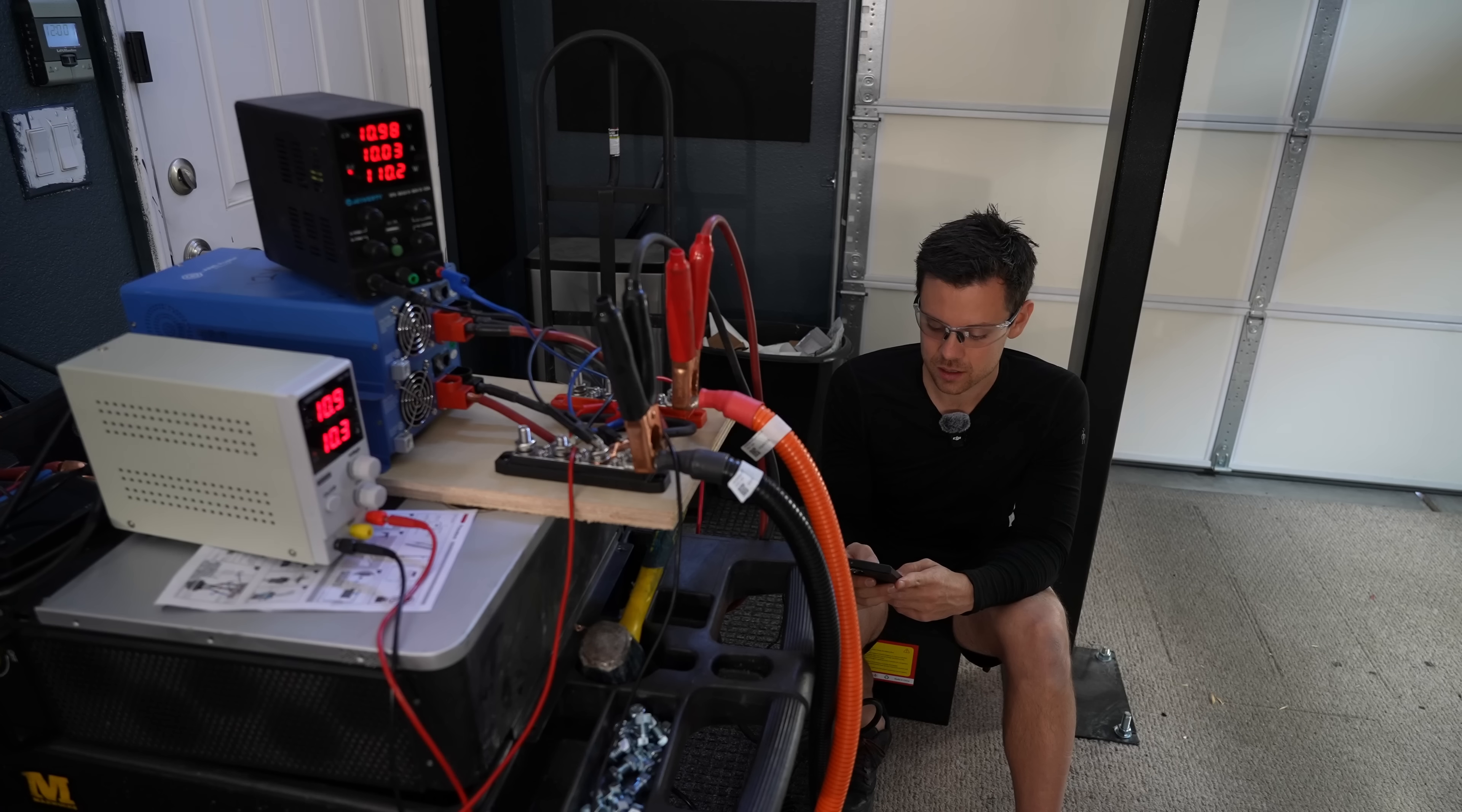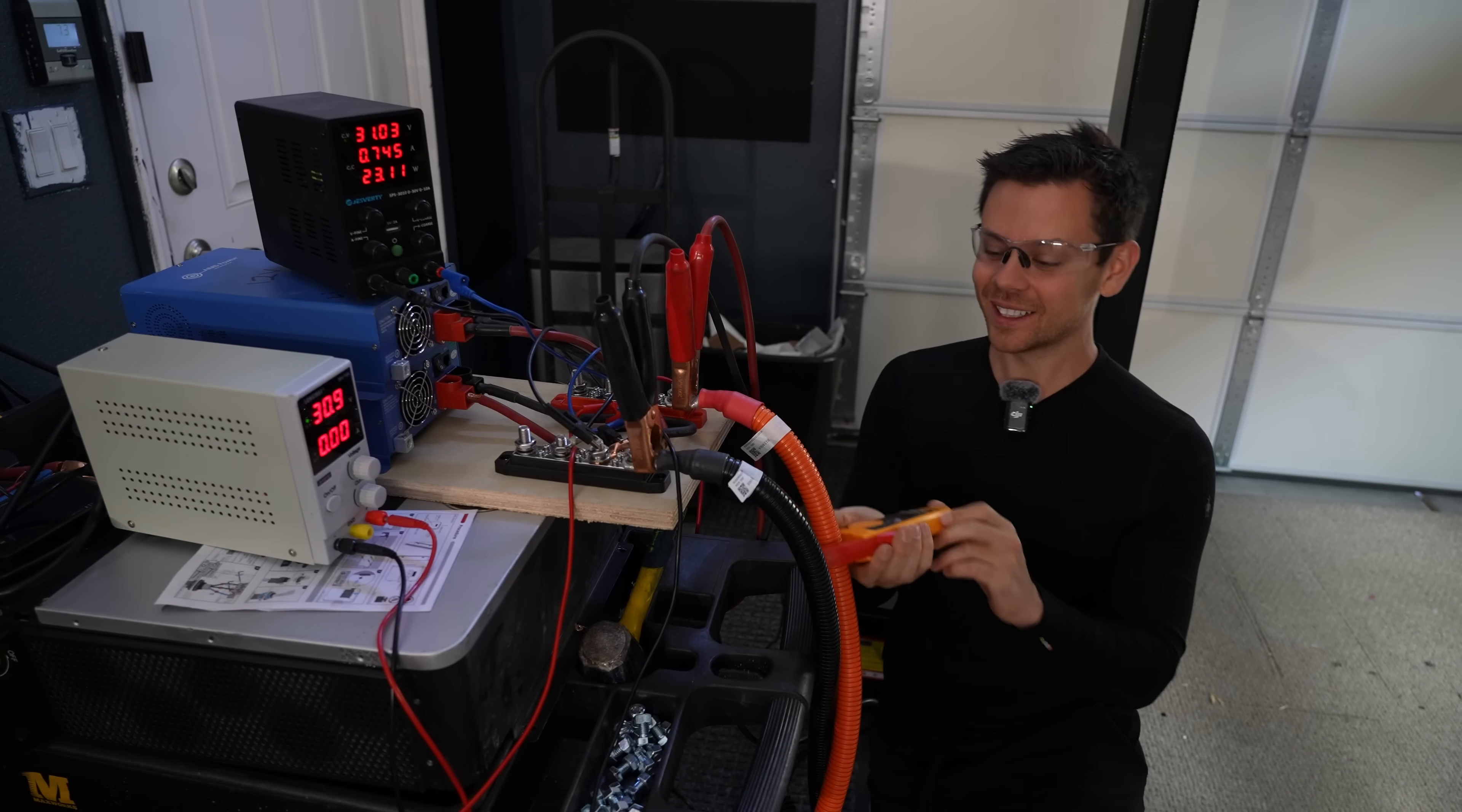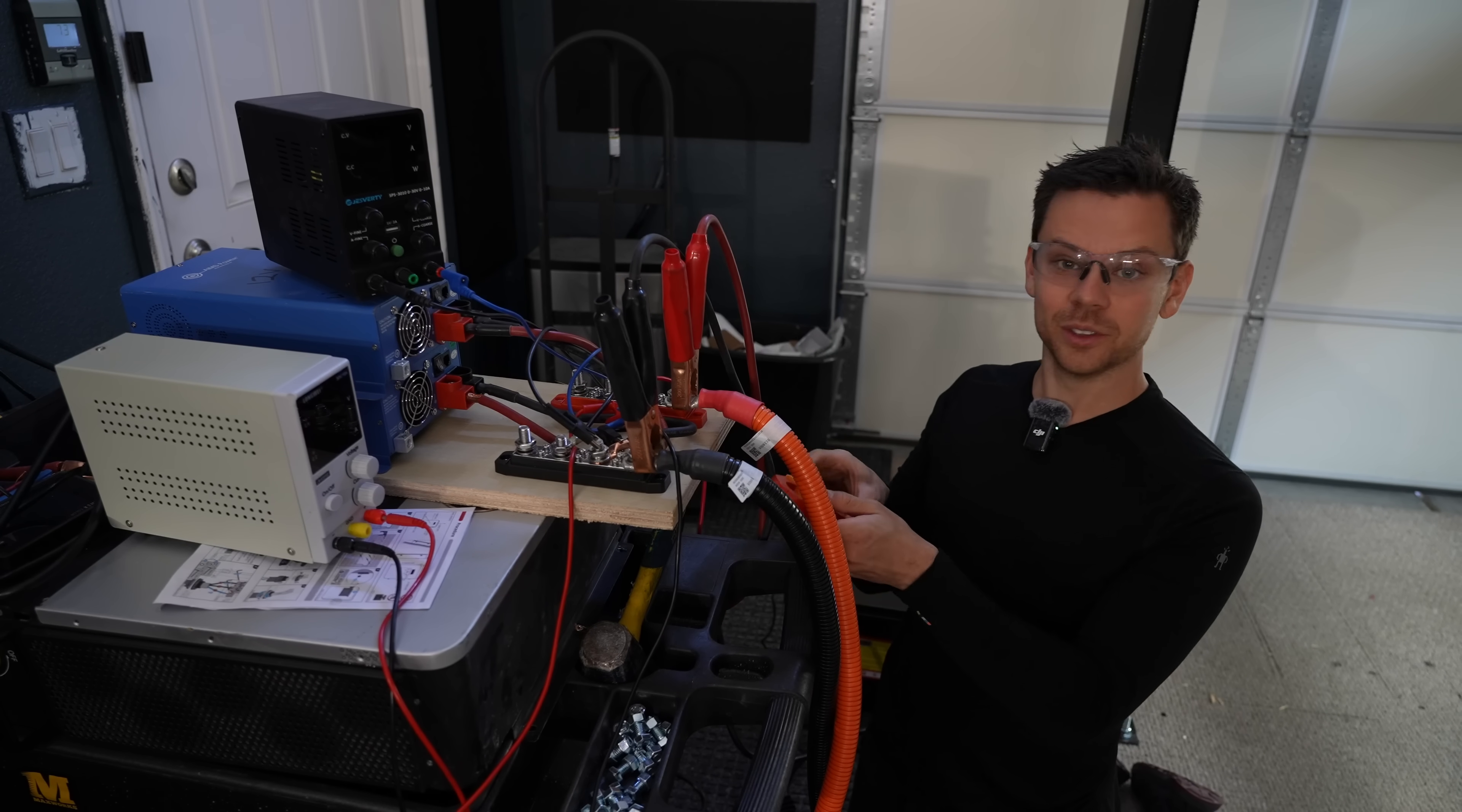There we go, it finally turned on. Now they claim that it has over current protection, so let's give it over a hundred amps and see if it works. It works, it actually shut down all the way so the BMS did its job. Let's turn off all these power supplies. Exactly 100 amps going into the battery, so in theory I should come back in 30 minutes, but because it's so inefficient I would say 40 minutes and then it will be fully charged.